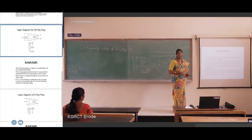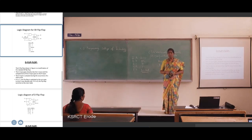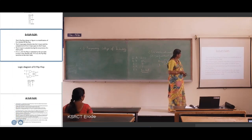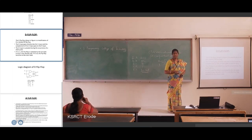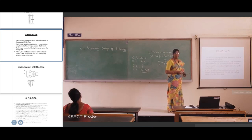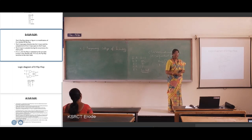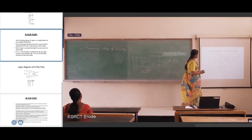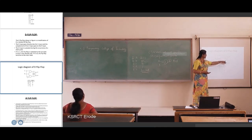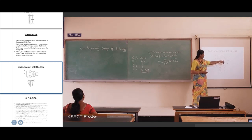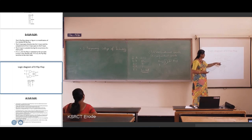The next type is the D flip-flop. In this flip-flop, you give only one input D. Here D is directly given to the S input, and the complement of D is given to the R input. This is the logic diagram of the D flip-flop. We are constructing it using an NOR latch — using NOR gate — and D is the single input directly connected to S, with the complemented output given to R.